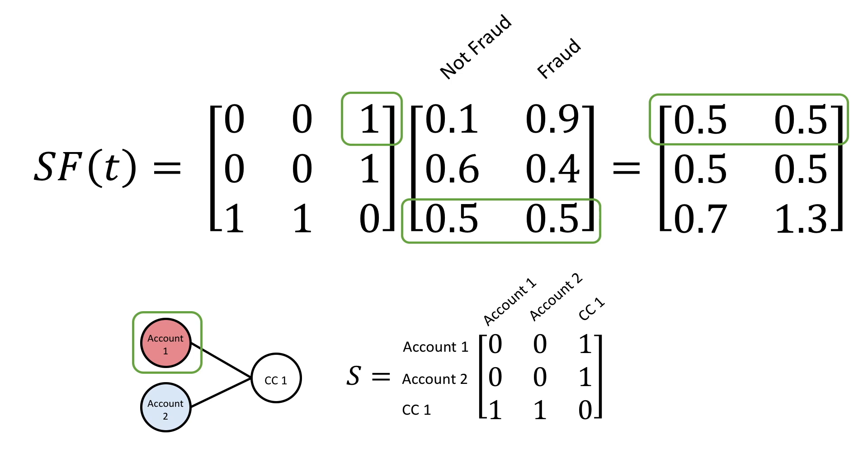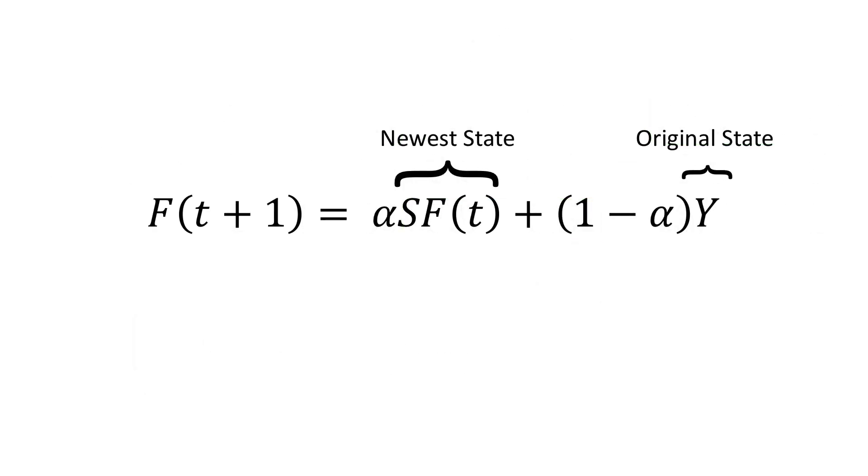That's where the second term comes in. Since it has our ground truth labels in it, we keep pumping this information into the network, which then spreads to the neighbors of our labeled nodes and beyond. The equation, therefore, updates the fraud prediction for a node based on its neighbor signals and the original estimate. And the alpha parameter tunes how much weight we put on each term when making an update.